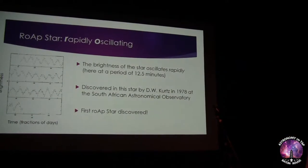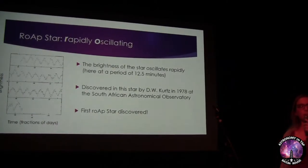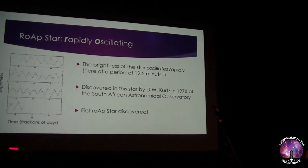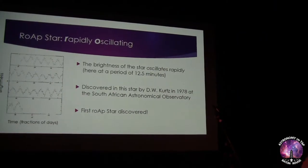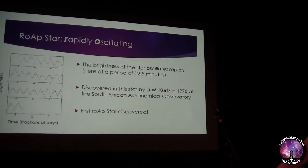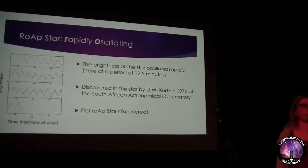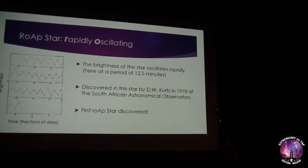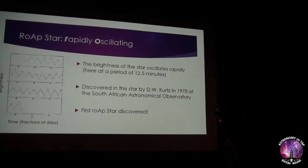The 'RO' in ROAP star means rapidly oscillating. If you look at this plot of brightness versus time, you can see it is changing quickly — every 12 and a half minutes the star is getting brighter and dimming and getting brighter again. This was discovered almost 18 years after Chbilsky originally observed this star, by D.W. Kurtz in 1978 in South Africa.